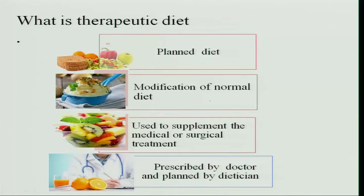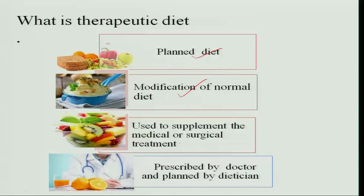A therapeutic diet is a planned diet because we know the condition of the patient and plan the diet accordingly. It is nothing but a modification of normal diet — you change the normal diet in terms of consistency, temperature, and other aspects and give it to the person. It is also used to supplement medical or surgical treatment, since medicine alone is not always sufficient. By providing a good diet alongside treatment, the patient recovers faster and regains normal nutritional status.